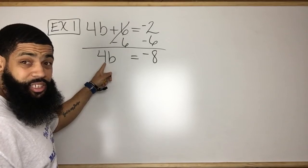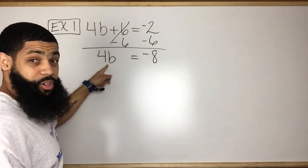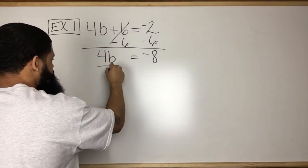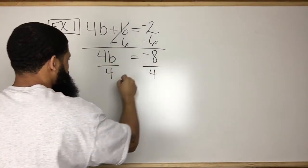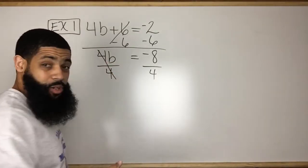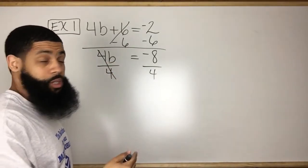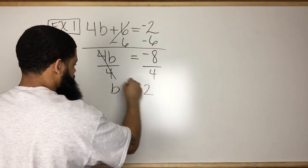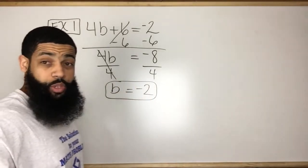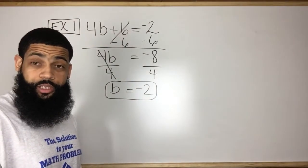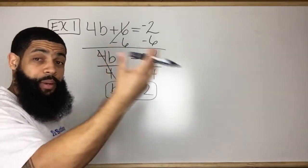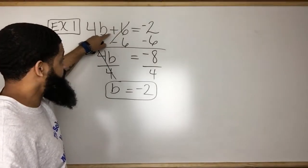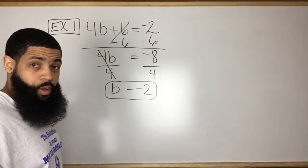Remember, this is multiplication. Anytime you have a coefficient right next to a variable, that's multiplication. So the opposite of multiplying by 4 is dividing by 4. So I'm going to divide both sides by 4, and these cancel out. Technically, 4 divided by 4 equals 1, and 1 times b equals just b, and then negative 8 divided by 4 is negative 2. Also remember, we can always plug in our answer to our original equation, and we should get a balanced equation on both sides. For example, 4 times negative 2 is negative 8. Negative 8 plus 6 equals negative 2.